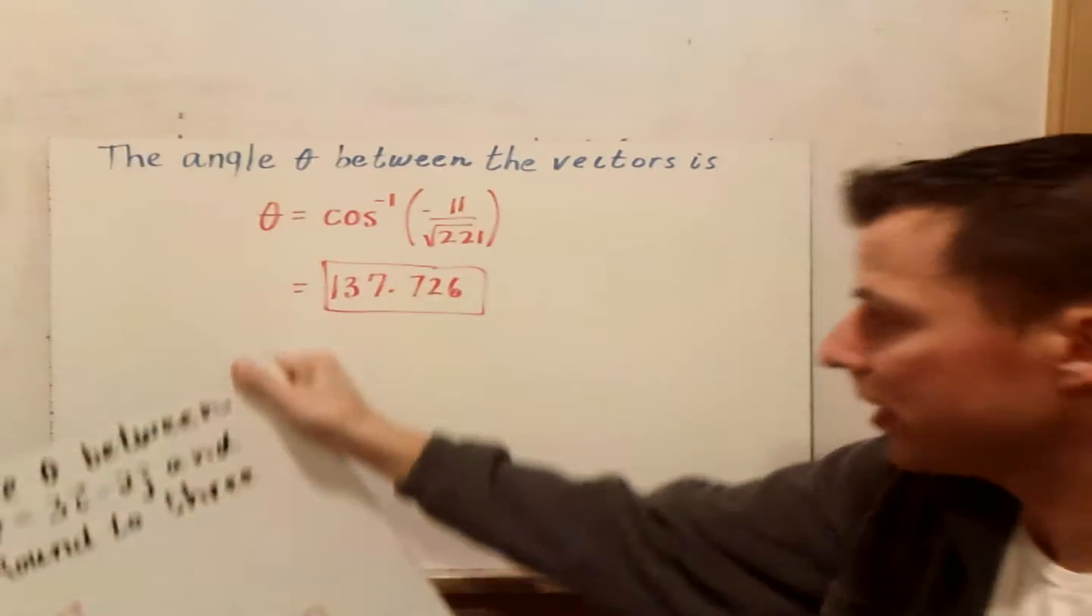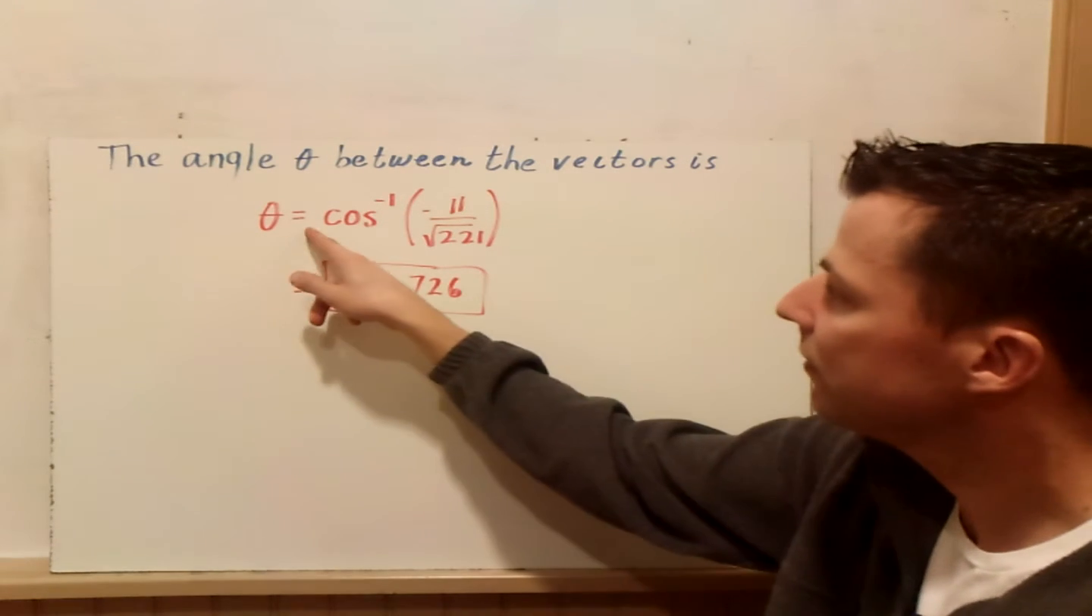So the final step here is just to take the inverse of what I found, the inverse cosine of negative 11 over the root 221. That's going to find my missing angle. My missing angle is 137.726.